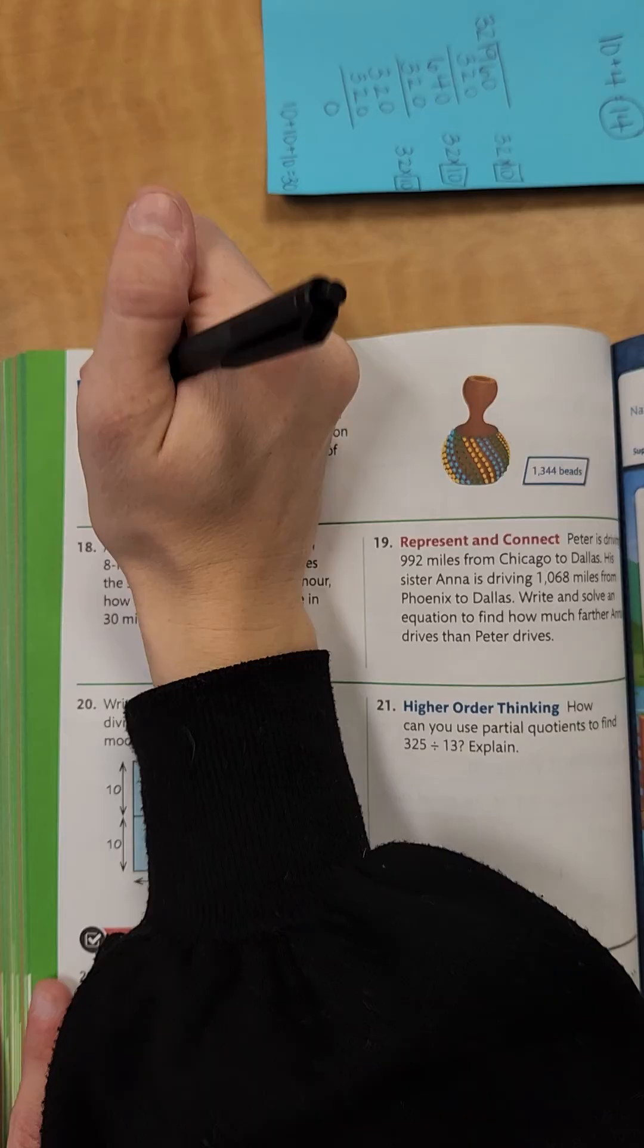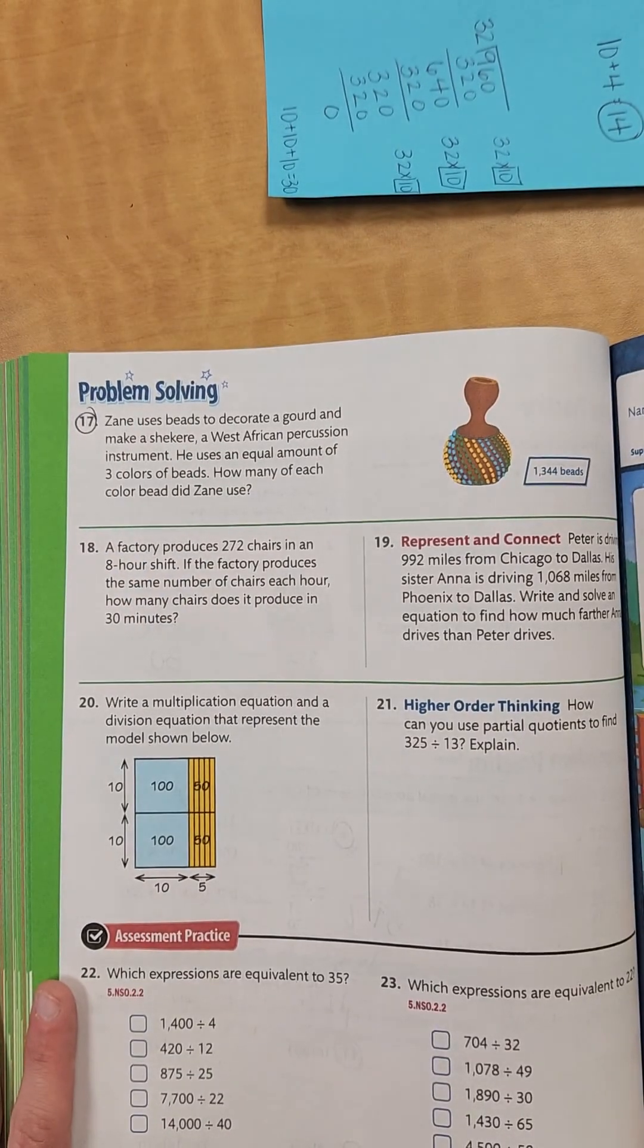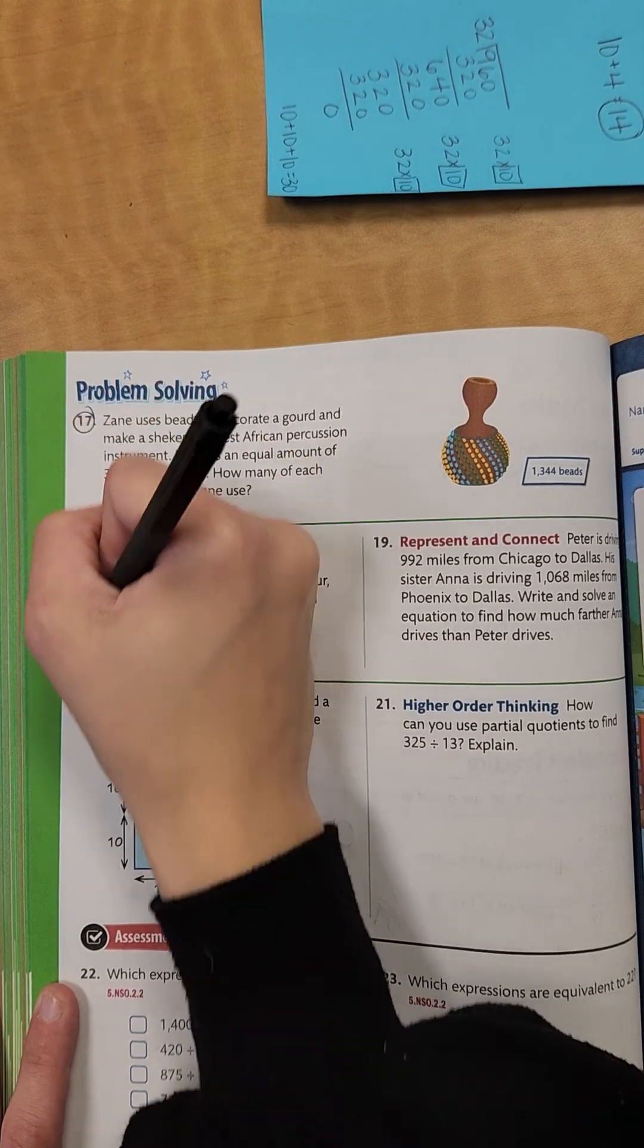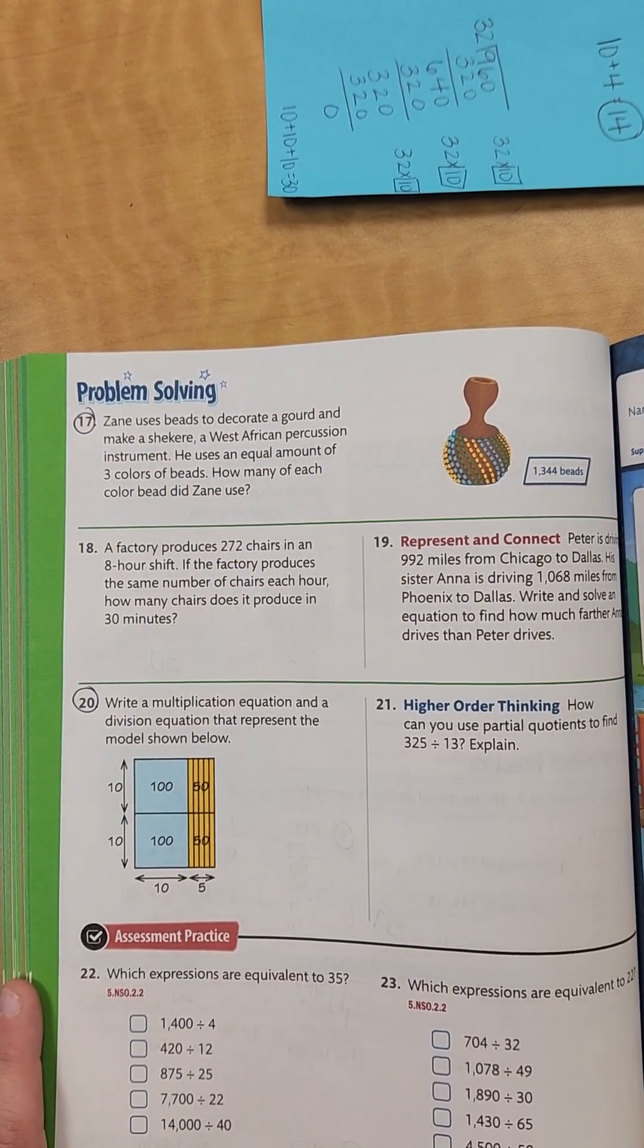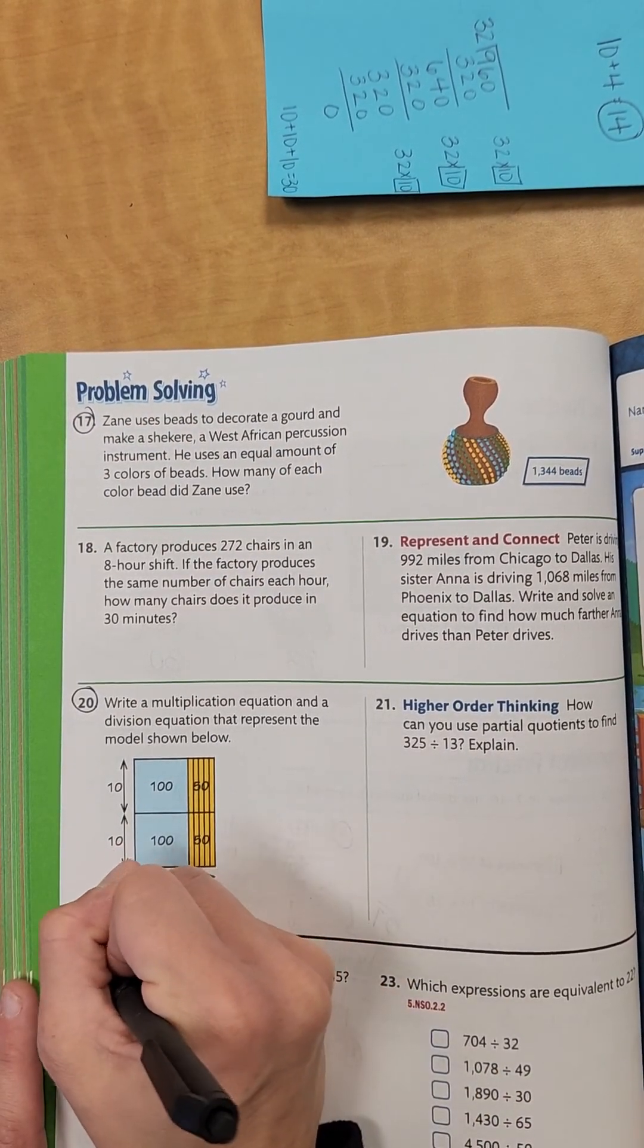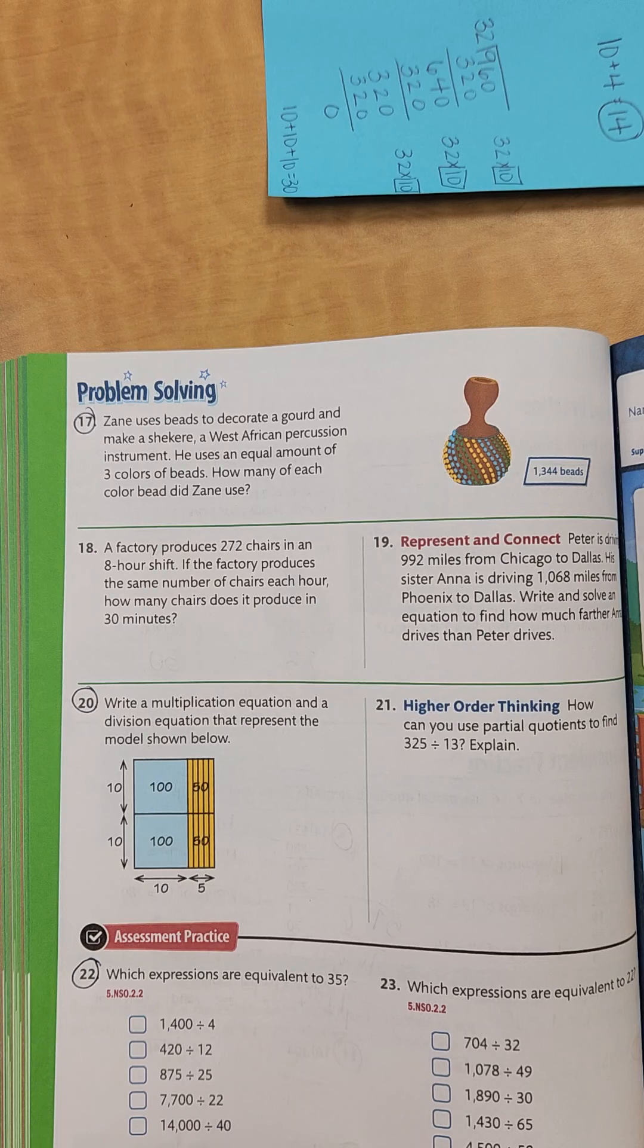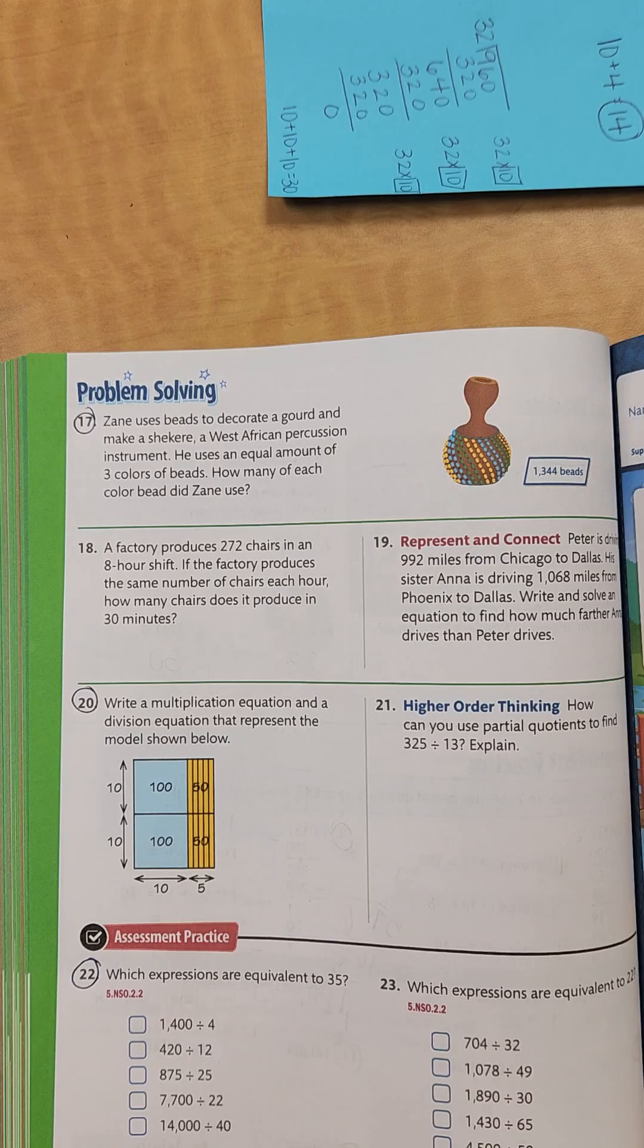Let's flip to the back. Let's do number 17, number 20, and 22. And then once you're done, I want you to hold onto it because we'll probably be checking over it unless I tell you otherwise.